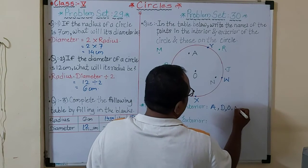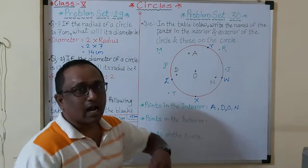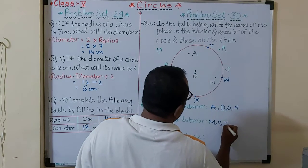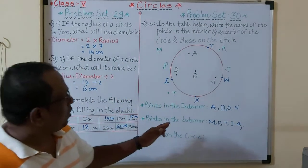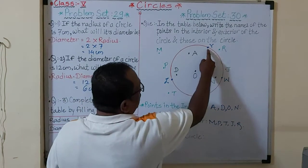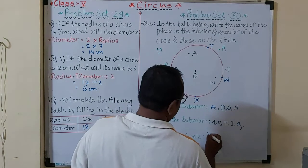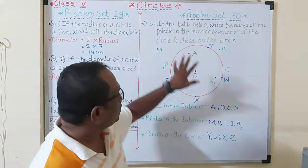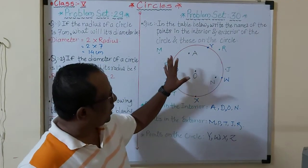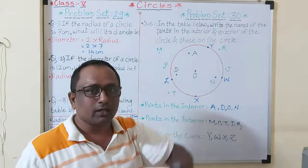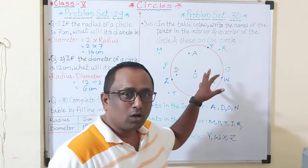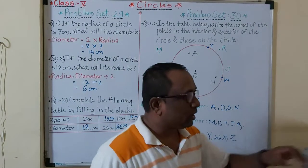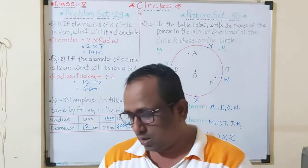Points in the exterior — outside the circle — write M, P, N, T, J, R. Points on the circle: write Y, W, X, Z. You can write them in any sequence. Count properly and write points in the interior, points in the exterior, and points on the circle. These points are not from the textbook, so also write and solve the example given in the textbook.